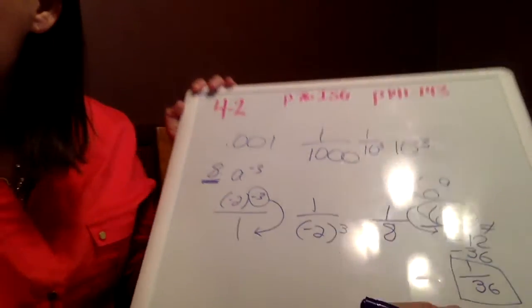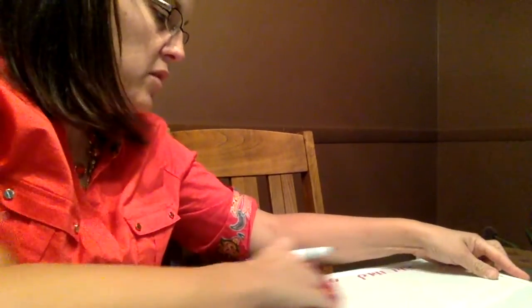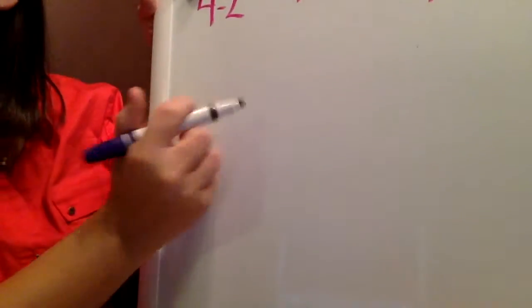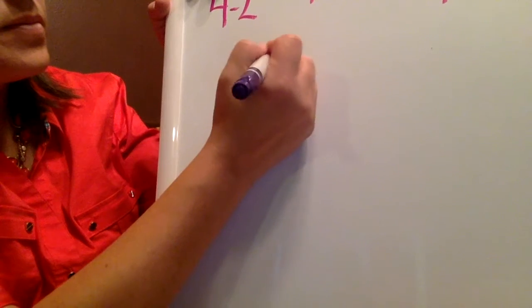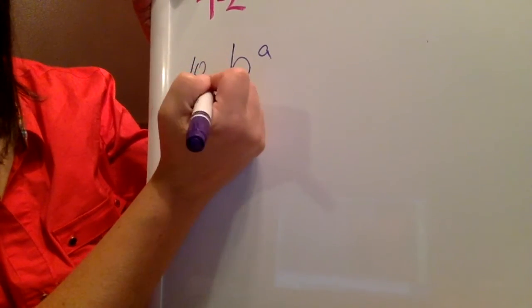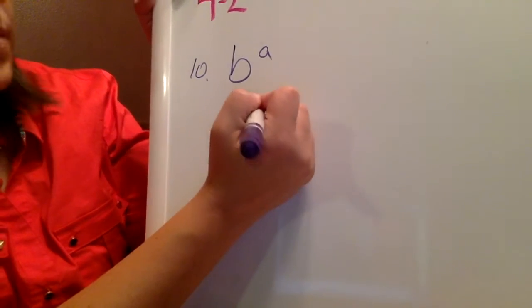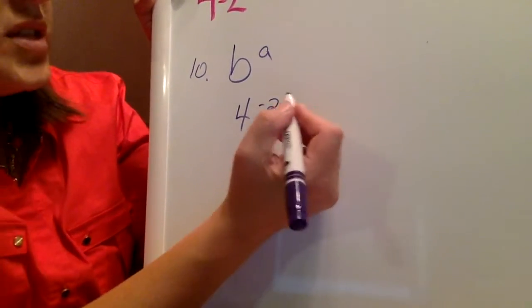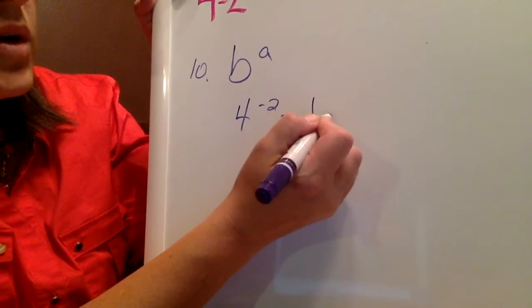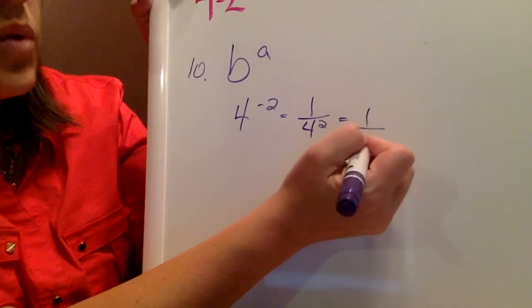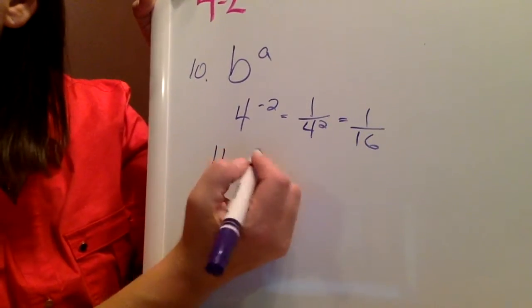And number 10 is b to the a power. So b to the a power. Why don't you look that out and pause the video and see if you get the same answer as I do. 4 to the negative 2 power is equal to 1 over 4 to the positive 2 power, which is equal to 1 over 16.